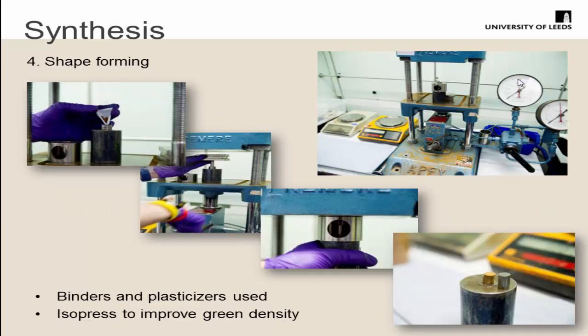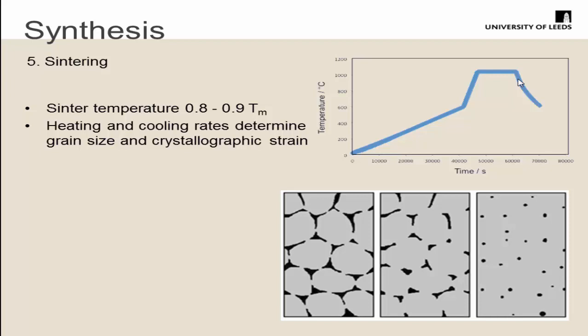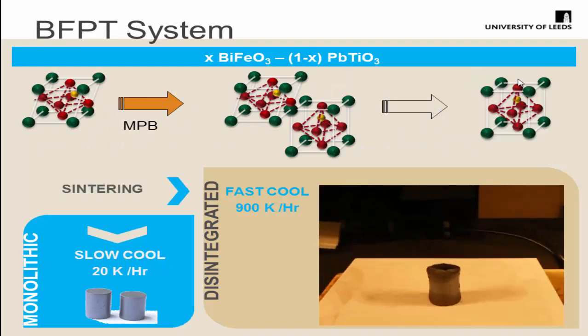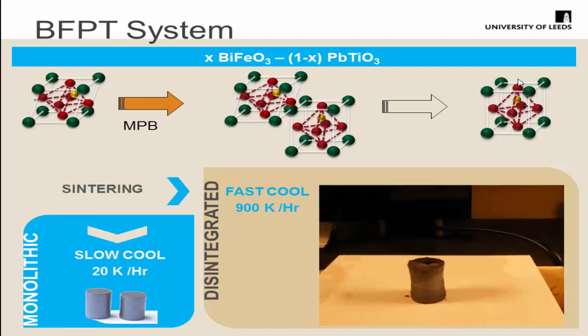Then we shape-form these using a uniaxial press — the powder is poured into a die and we get pellets out. We use binders and plasticizers to achieve good density, and we can also isopress them to get a green density of about 50% before putting them in to sinter. The sintering temperature is typically between 0.8 and 0.9 of the melting temperature, binding the grains into a solid ceramic lump. We play around with the heating and cooling rates to achieve different material properties and control microstructure and crystallography.